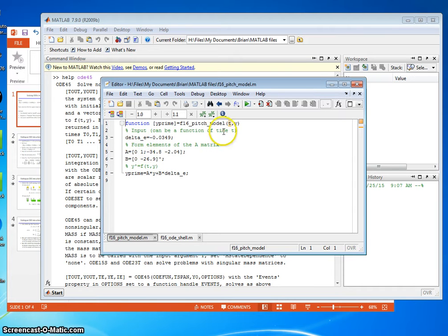Then we build our function with whatever commands we want. Our input can be a function of time, but in our case, it's constant over all time. If it changed over time, you would use if-then logic to change the input depending on the time value. In our case, it's constant.